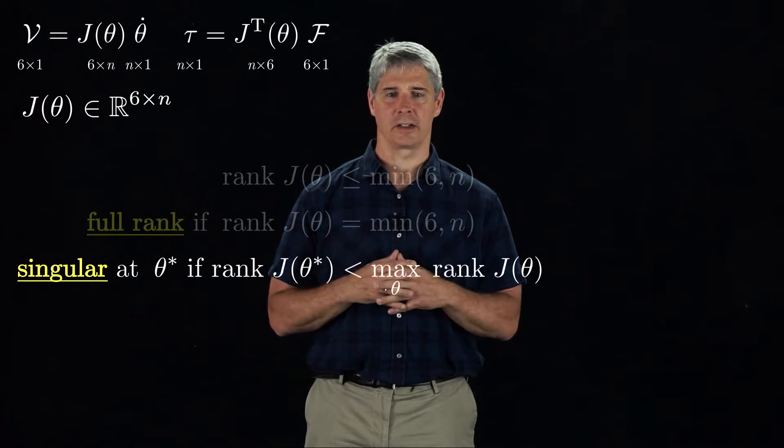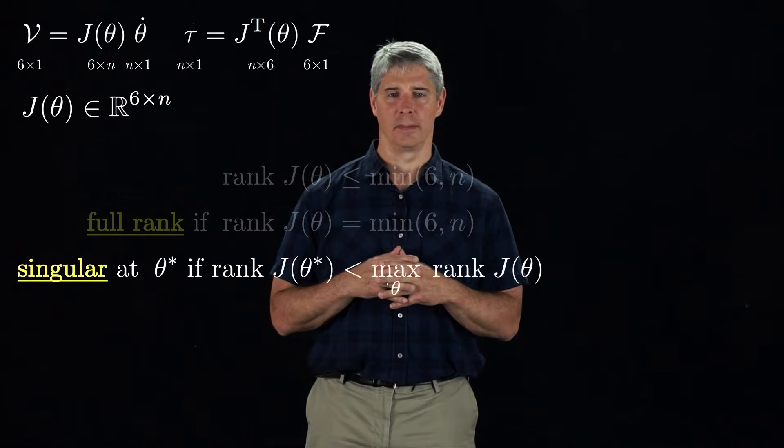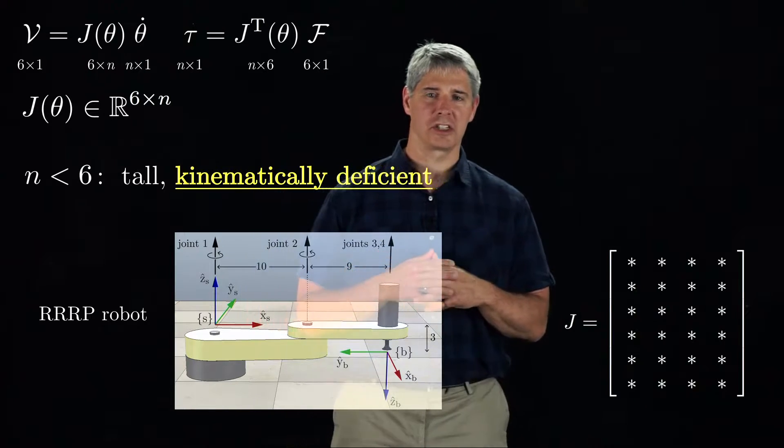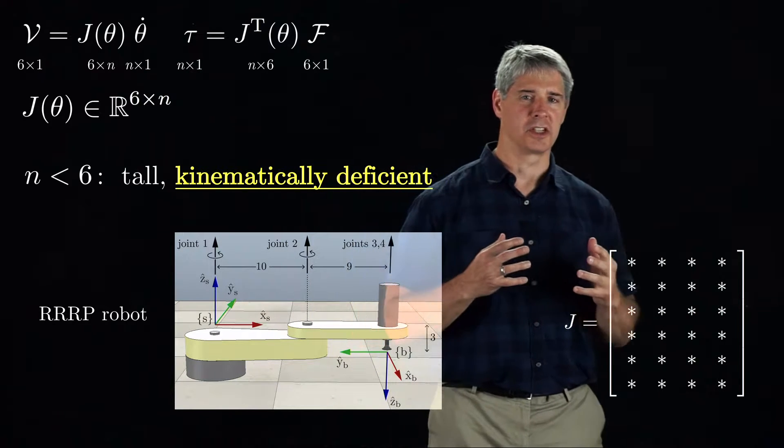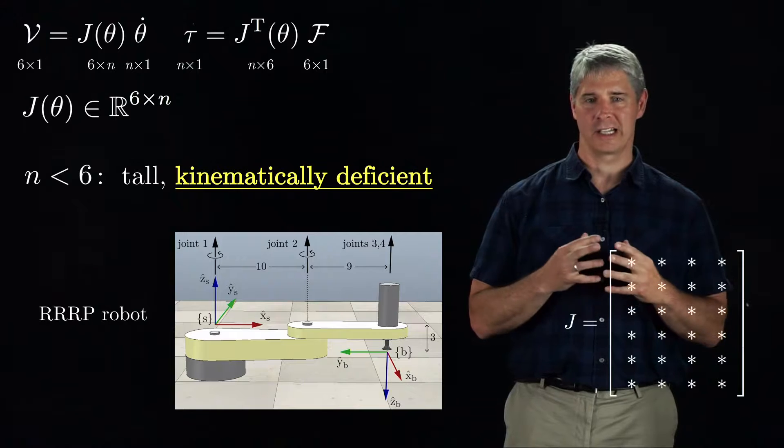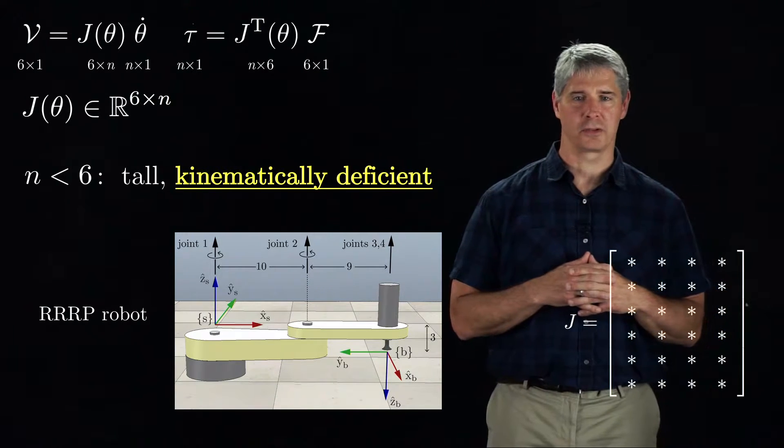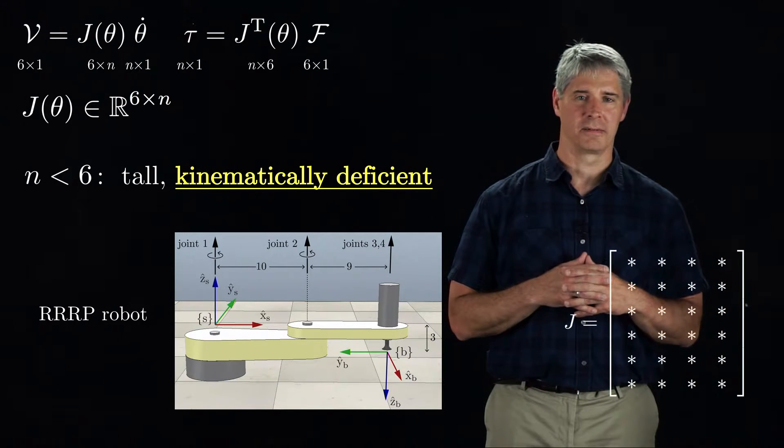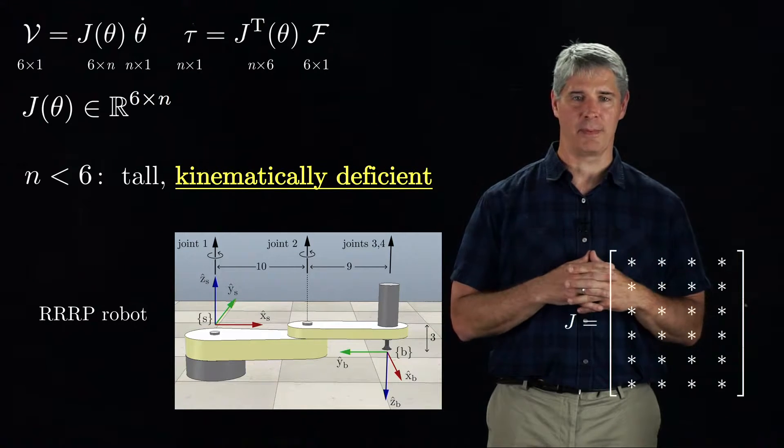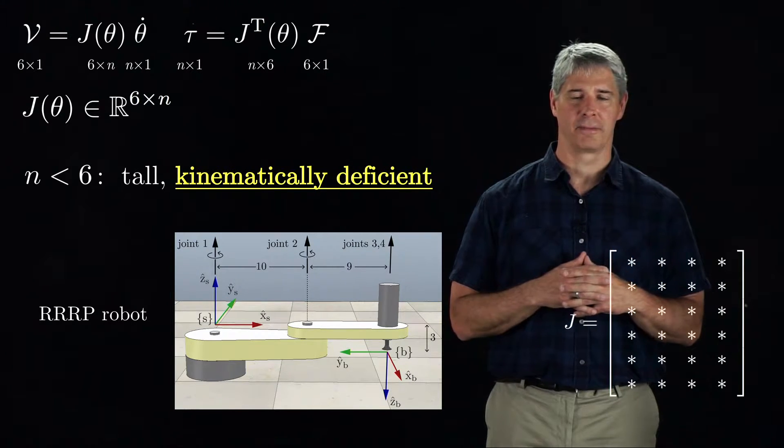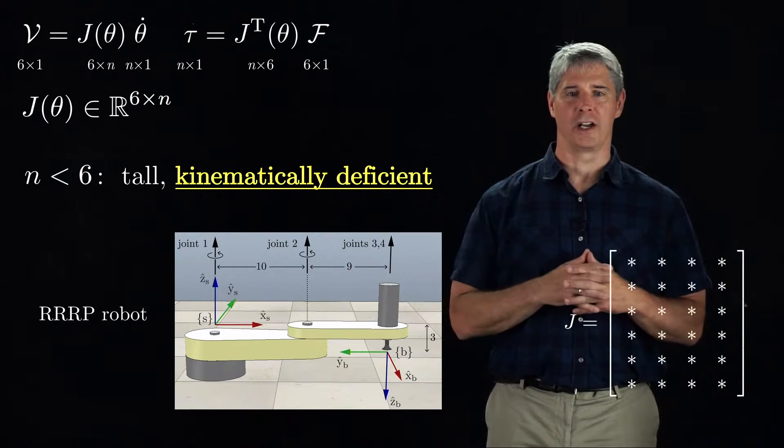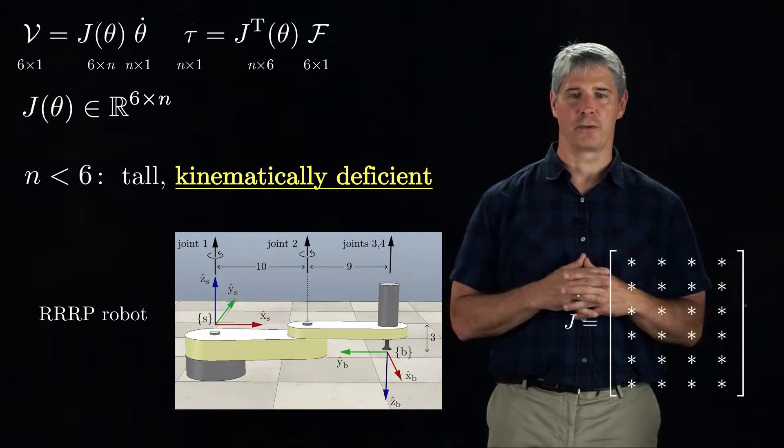We can also characterize Jacobians according to the number of joints n. If n is less than 6, the Jacobian is tall, meaning it has more rows than columns. The set of reachable configurations for the end-effector is less than 6-dimensional, so we call such robots kinematically deficient. This does not mean the robot is not useful, it just means it's not capable of general motion at the end-effector. An example robot is the four-joint RRRP robot, shown here, which has a 6 by 4 Jacobian.